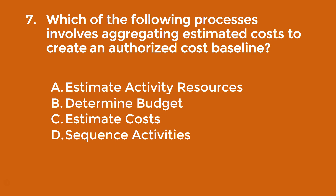Question seven: which of the following processes involves aggregating estimated costs to create an authorized cost baseline? The correct answer is B — determine budget. The estimate costs process is used when approximating activity costs. We then aggregate those costs and create an authorized cost baseline in the determine budget process.